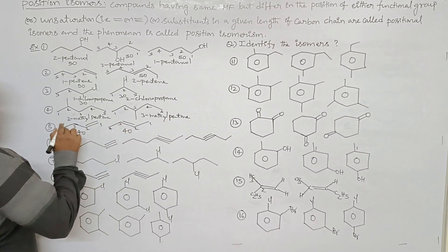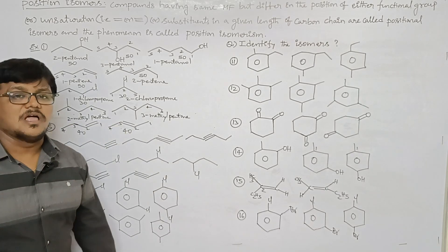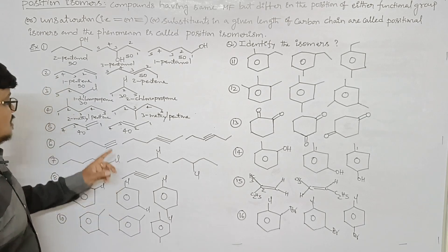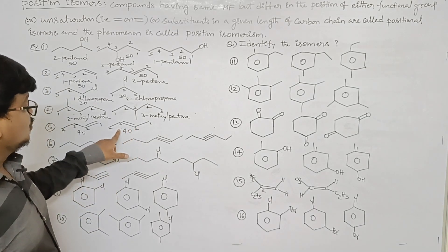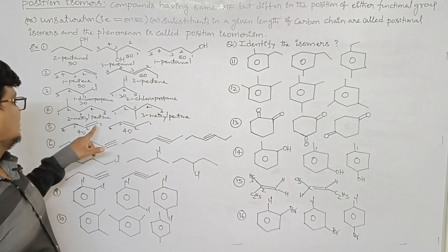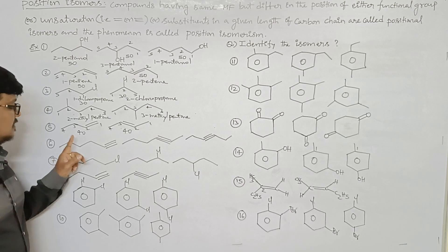The fifth example: the first compound is named 2-butene and the second compound is named 1-butene.